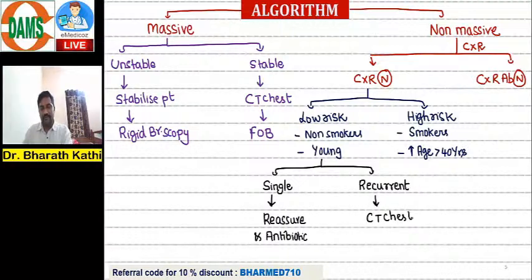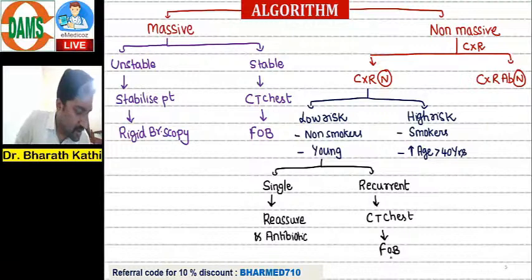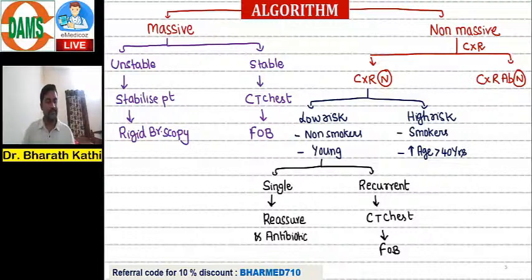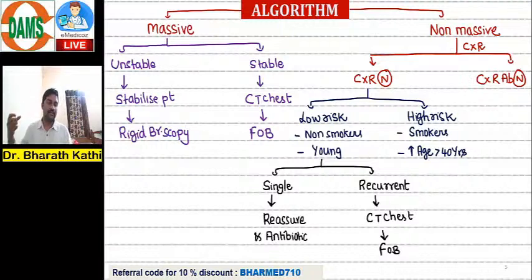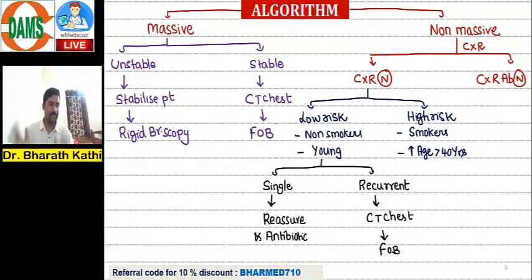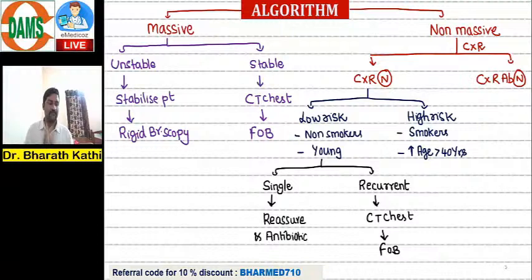If it is a recurrent episode in a low-risk patient, go for CT chest followed by fiber optic bronchoscopy. For high-risk patients — even a single episode should be evaluated immediately with CT chest followed by bronchoscopy. In unstable patients, I skip CT chest and go directly to rigid bronchoscopy because sending an unstable patient to CT risks them collapsing there.